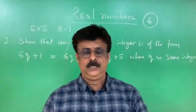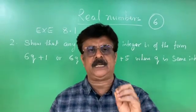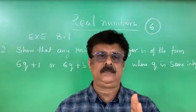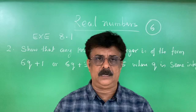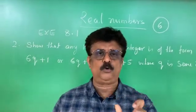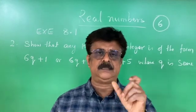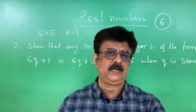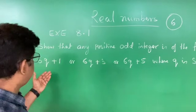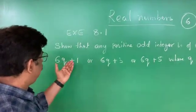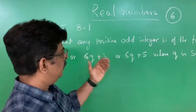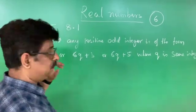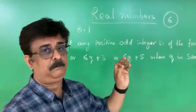Any positive integer, if it is an even number, is in the form of 2q. If a number is an odd number, it should be in the form of 2q+1. Any number in the form of 2q+1 is an odd number; any number in the form of 2q is even. Here we are given three expressions — 6q+1, 6q+3, 6q+5 — and we have to prove they are odd numbers, meaning they should be in the form of 2q+1.